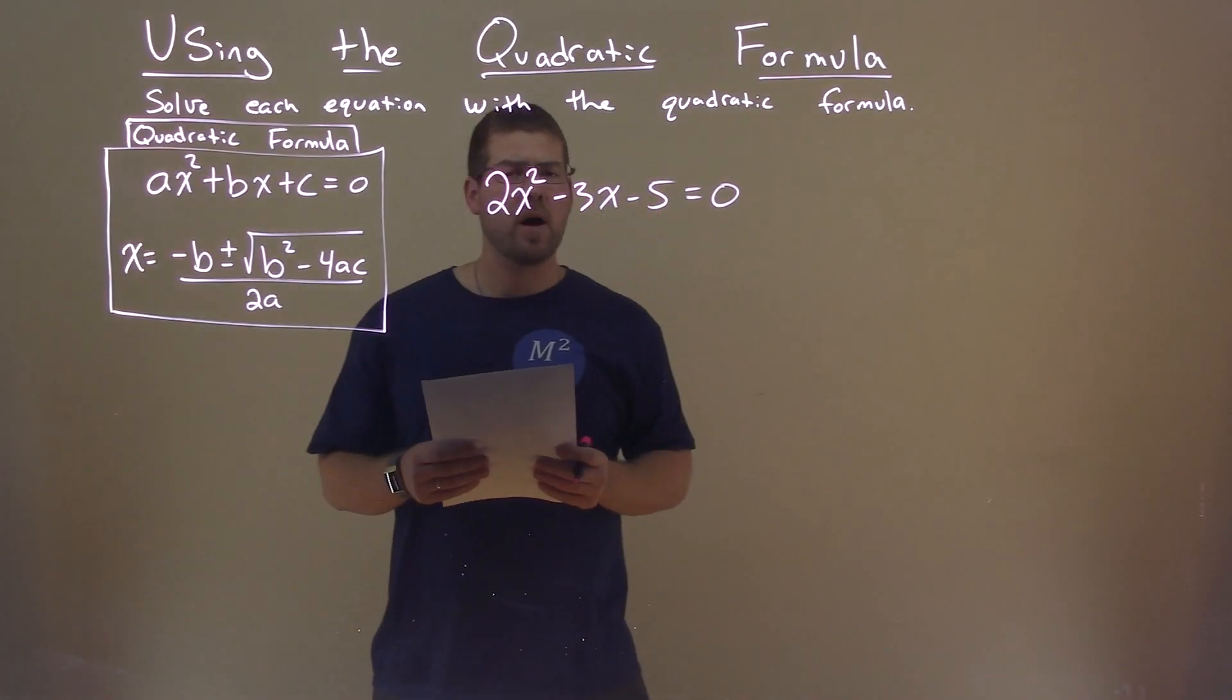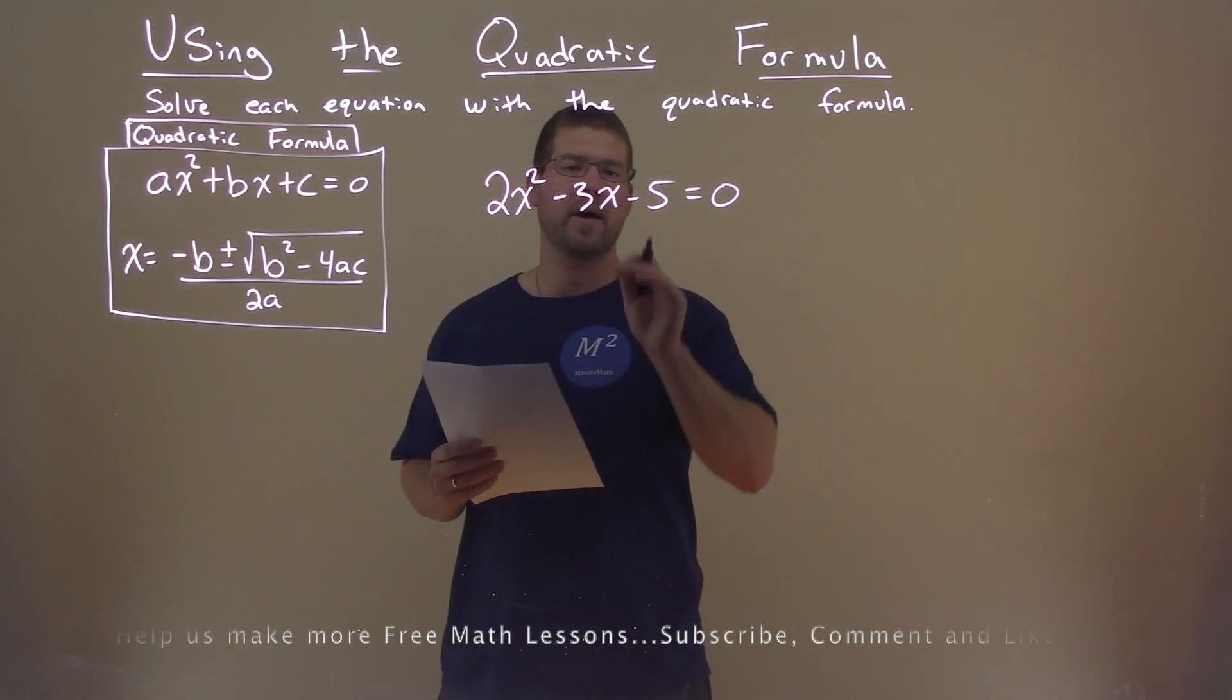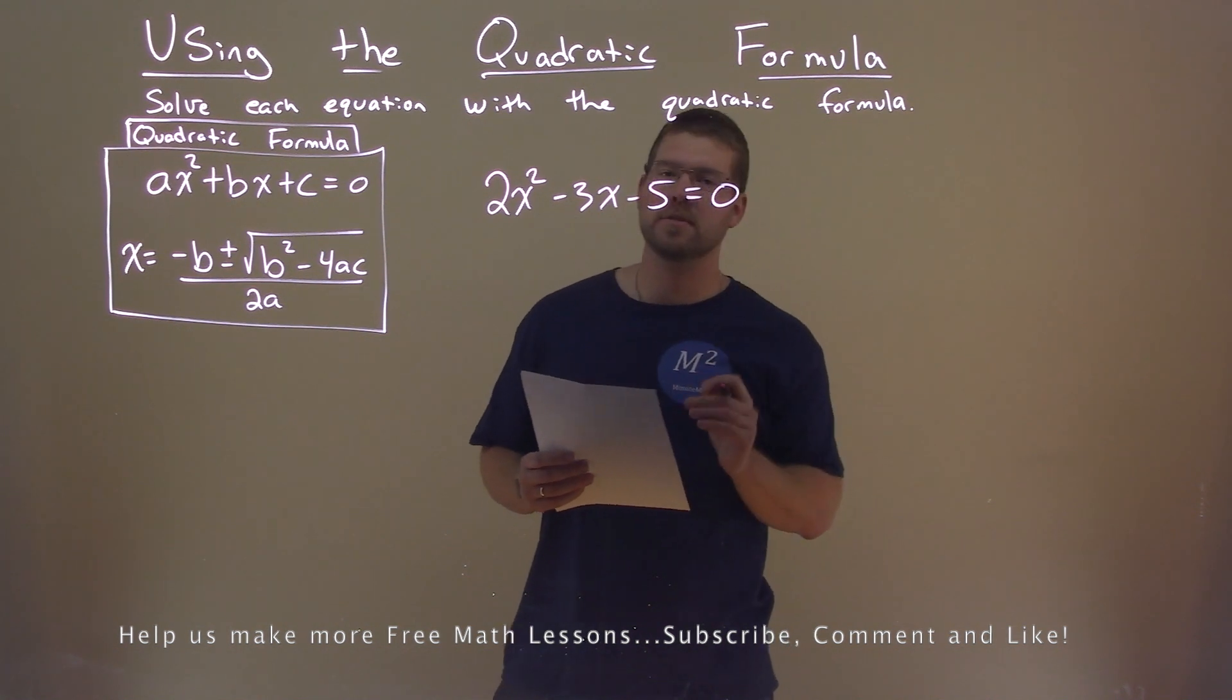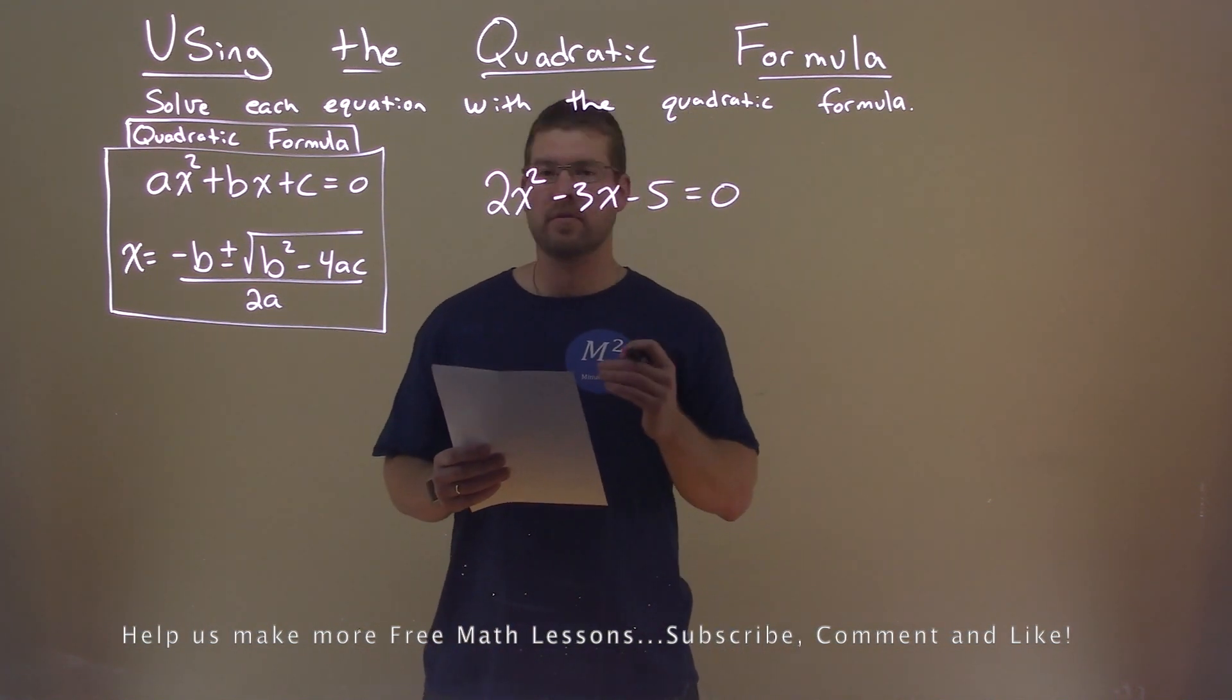We're given this problem right here: 2x squared minus 3x minus 5 equals 0, and we want to solve this using the quadratic formula.